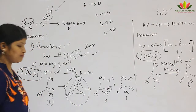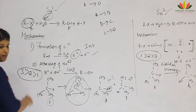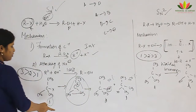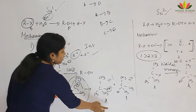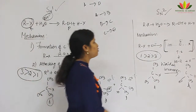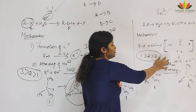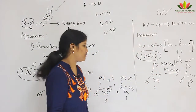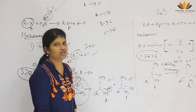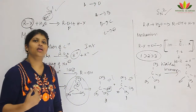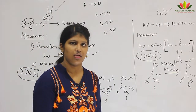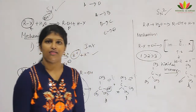To summarize SN1 and SN2: SN1 has two steps — formation of carbocation (rate-determining step) and attacking of nucleophile — and gives racemization. SN2 has a transition state, is a one-step mechanism, and gives Walden inversion — the product has exactly the opposite configuration of the starting isomer.